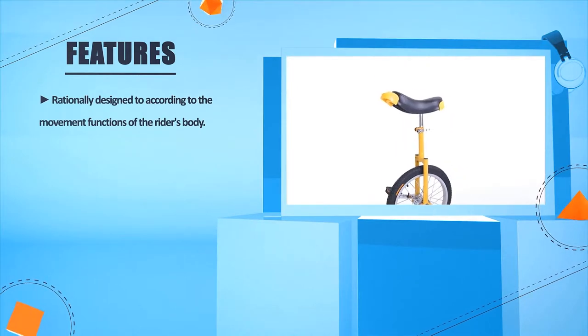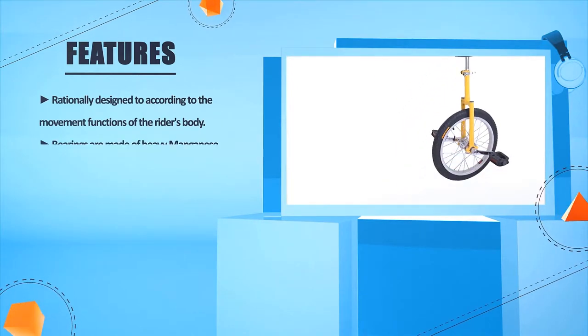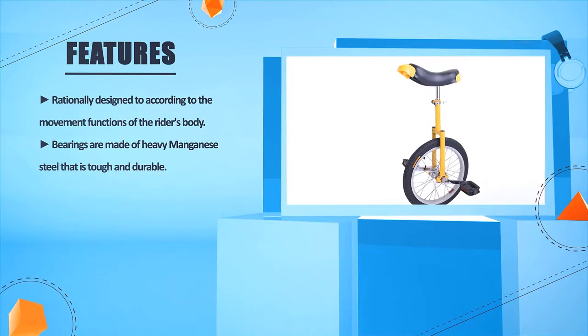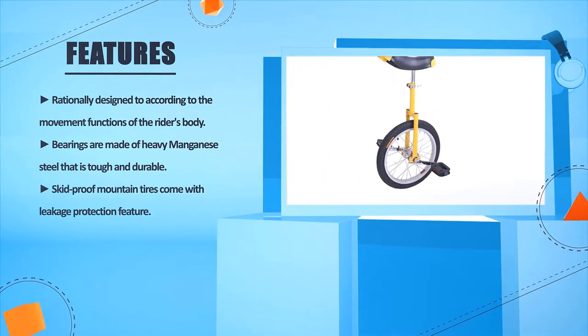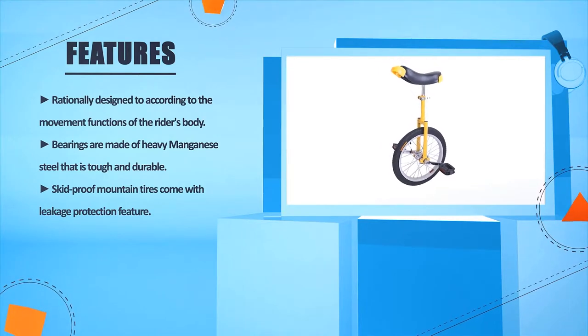Rationally designed according to the movement functions of the rider's body. Bearings are made of heavy manganese steel that is tough and durable. Skid proof mountain tires come with leakage protection feature.